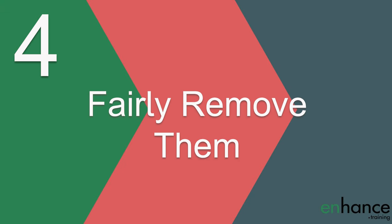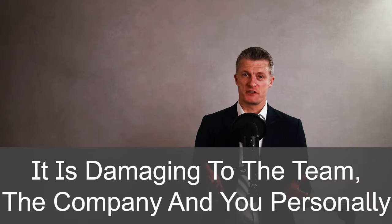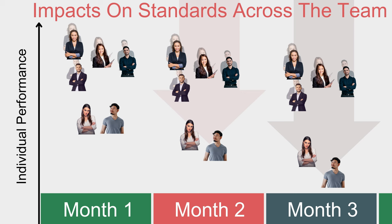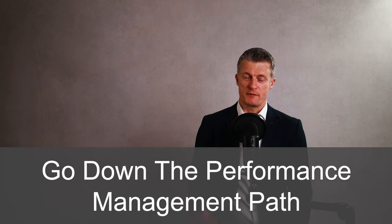If there are no alternative roles or transferring is not a good option for the business, then the last step is to fairly remove incompetent employees from the team. It is damaging to the team, the company and to you personally to leave an incompetent person in your team, as they will reduce overall team performance significantly. The biggest impact on team performance from incompetent people comes through the negative impact they have on performance expectations, standards across the team, and on the culture and work ethic within the team. Help the incompetent employee leave with dignity and be respectful where possible. Give them enough notice to find another job or give them a fair offer to leave via a settlement agreement or similar. If they don't want to leave, then go down the performance management path.